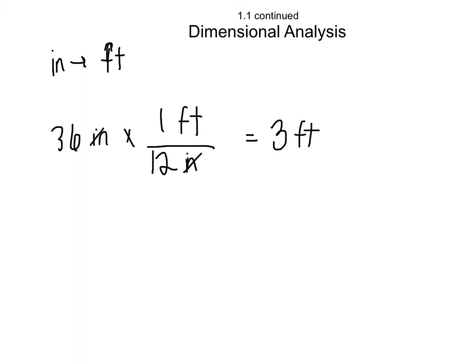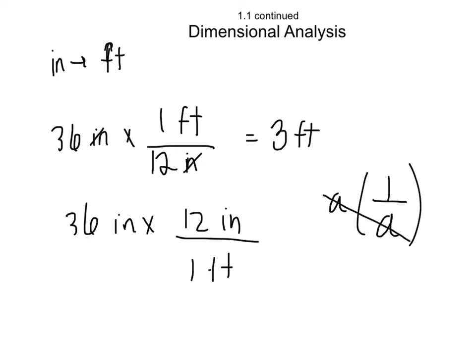You're probably familiar with dimensional analysis, but this is how you get from one unit to another. Say you have 36 inches and want to get to feet. You multiply that by 12 inches over 1 foot. Cancel out the inches, 36 divided by 12 is 3, you have 3 feet. You always want the inches to line up on the top and bottom so they can cancel out. It's the same thing as if you had a times 1 over a. Those cancel out and equal 1.